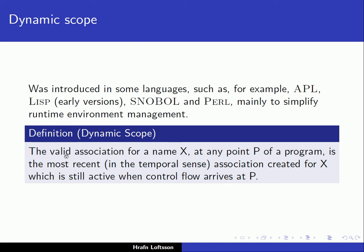What does dynamic scope mean? We say that the valid association for a name x at any point p of a program is the most recent — in the temporal sense — association created for x, which is still active when the control flow arrives at p. So it's the most recent association which is still active.